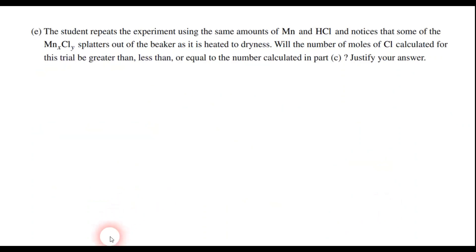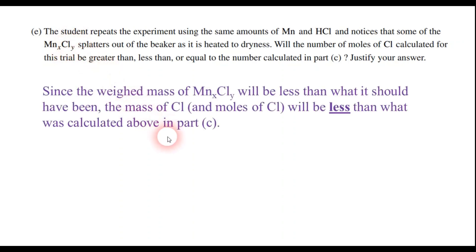Give yourself one point if you got that one right as well. All right, moving on to part E. We have the same experiment, but this time here's an error analysis question. It says that the student repeats the experiment, but notices that some of the final product splatters out of the beaker as it is heated to dryness. And so when you calculate the number of moles of chlorine, is it going to be greater than, less than, or equal to what we calculated earlier? Well, remember, if you're splattering out some of the product, you're actually splattering out some chlorine as well. And so that means you're going to calculate less chlorine than what you really had, or at least what we got in part C.